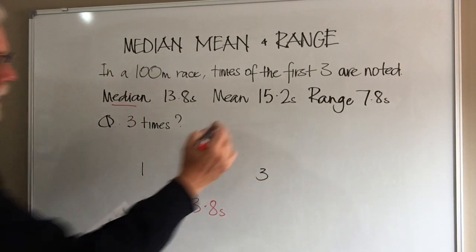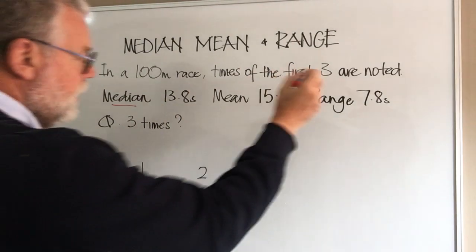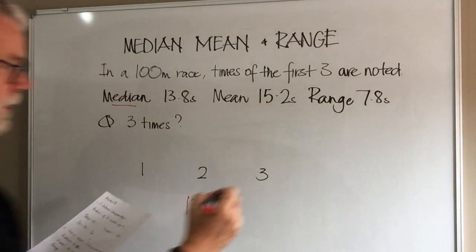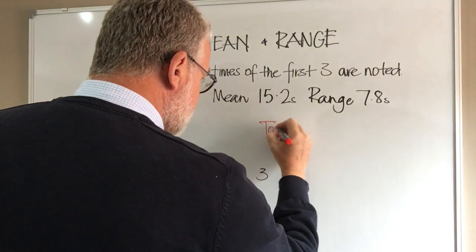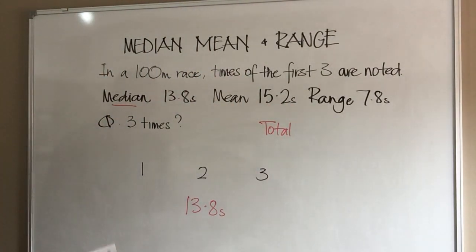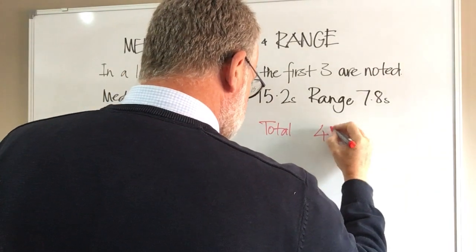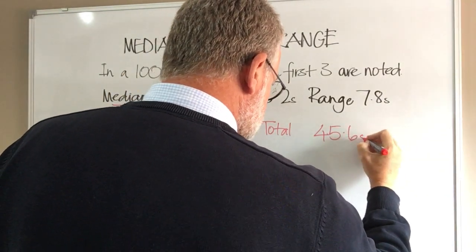Now, what else do we know? We know the mean is 15.2 seconds. Because there were three runners, the total time taken was three times 15.2, which is 45.6 seconds.